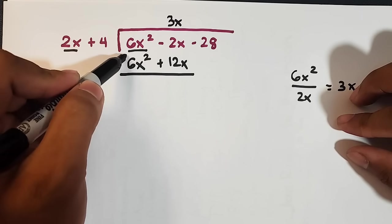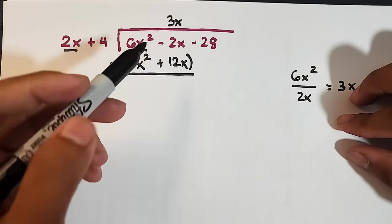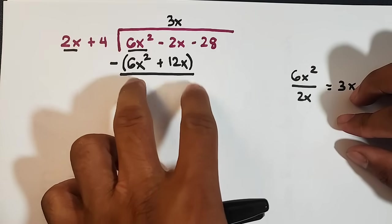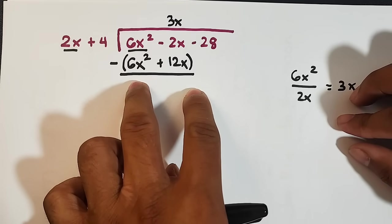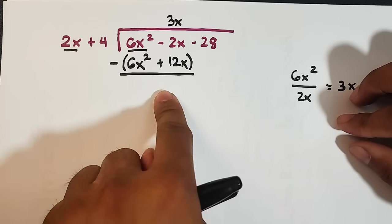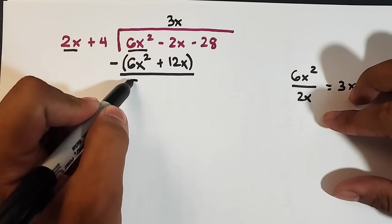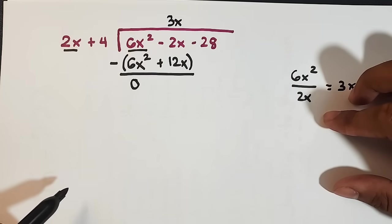Now, after multiplying, enclose this in parentheses guys, so you won't make a mistake. Always enclose by parentheses the answer from multiplying. So that is 6x squared minus 6x. If you notice, this will become 0.